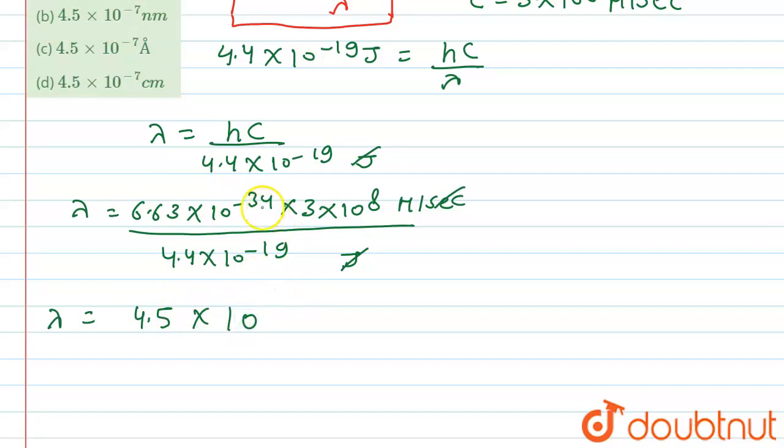× 10 to the power... Now to calculate 10 to the power, that 10^-34 plus 10^8 gives out 10^-26, and this 10^-19 gets above and it becomes positive. Then 10^-26 plus 10^19 will give a negative value, that is 4.5 × 10^-7 meters.